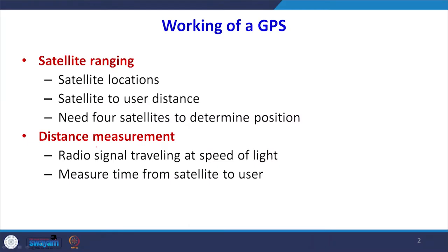The working of the GPS receiver is based on two things. One is satellite ranging — catching signals from the satellite: which are the locations of those satellites up in the sky, what is the distance from the satellite to the user, and why there is a need to observe a minimum of 4 satellites in order to determine the position. This is called satellite ranging.